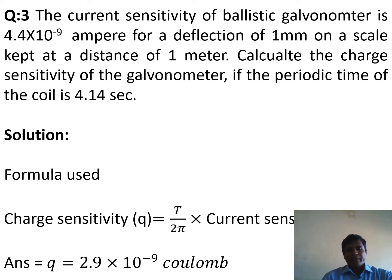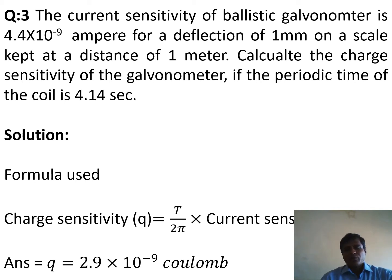Solution. The given quantities are: current sensitivity = 4.4 × 10⁻⁹ amperes, deflection = 1 millimeter, and periodic time T = 4.14 seconds. We know that charge sensitivity Q = (T / 2π) × current sensitivity. Substituting the values, the final result is Q = 2.9 × 10⁻⁹ coulombs.